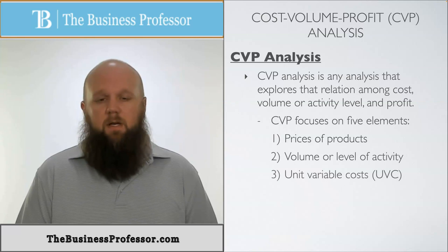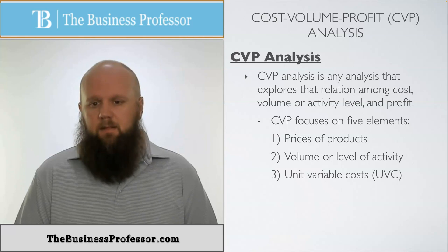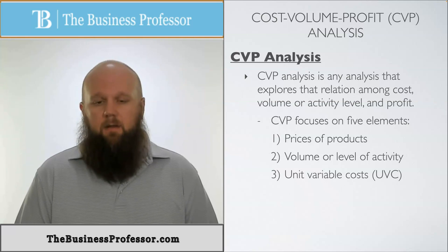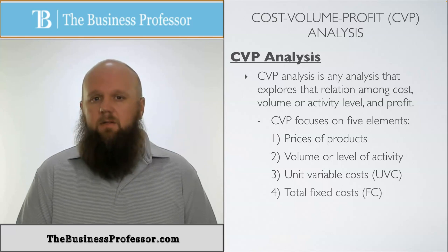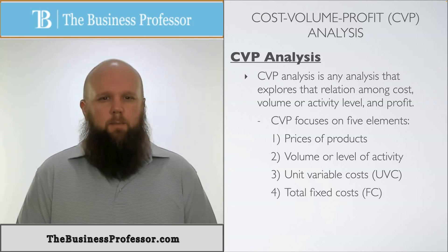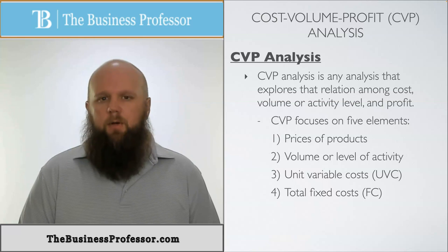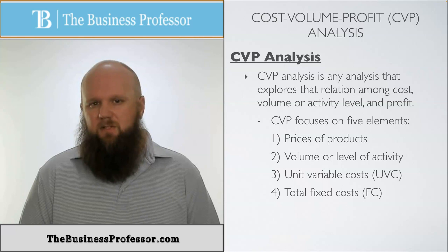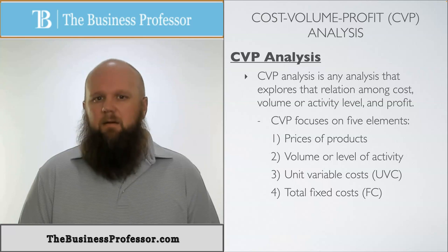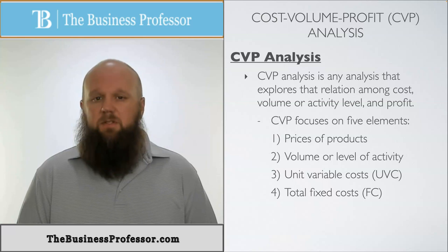The third factor is the unit variable cost, or UVC — we want this in per unit form. The fourth is the total fixed cost, or FC — we want that in total form. We use per unit format as much as we can because total form doesn't give us as accurate a representation of the situation.